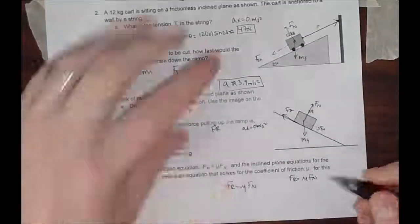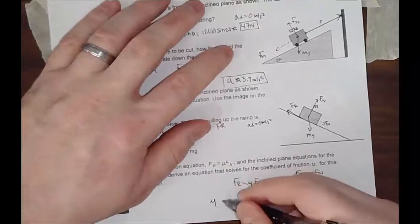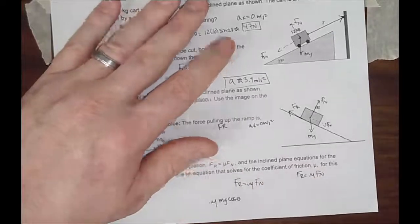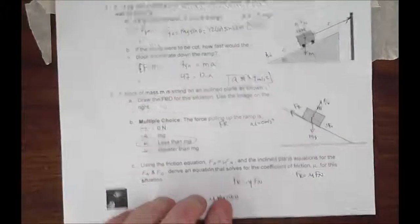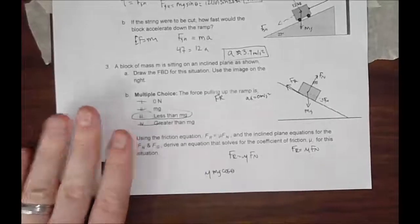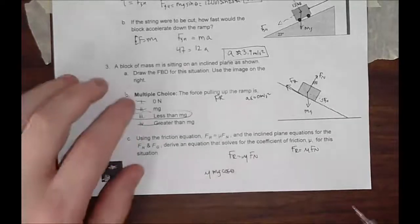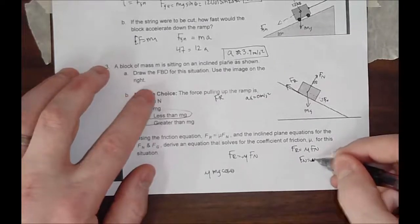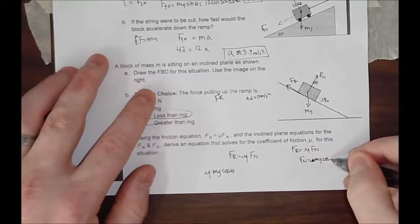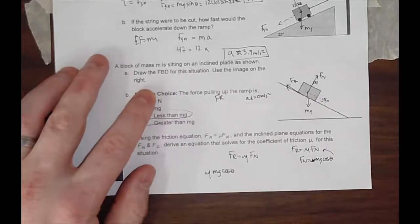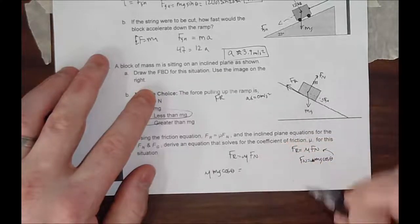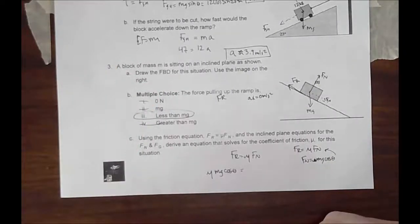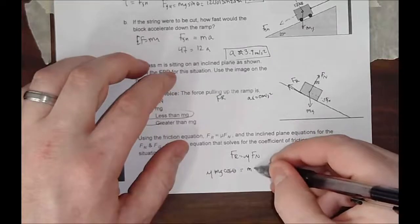I've just taken this, what we've learned, and plugged it in right there, and that's how I got that. So that is equal to what is pulling the object down the ramp. They have to be equal and opposite. That would just be mg sine of theta.